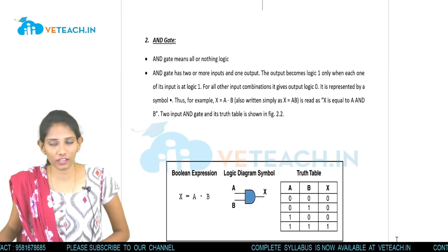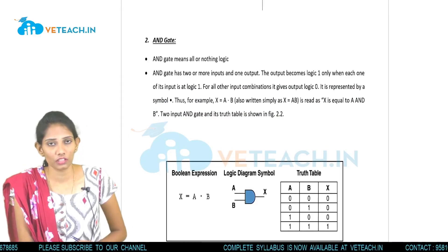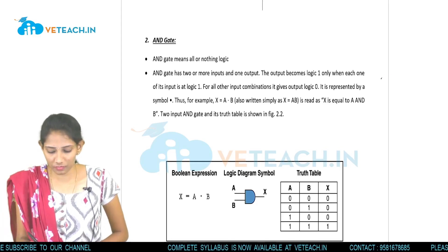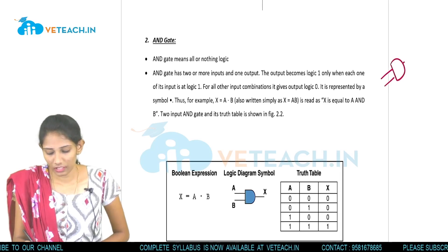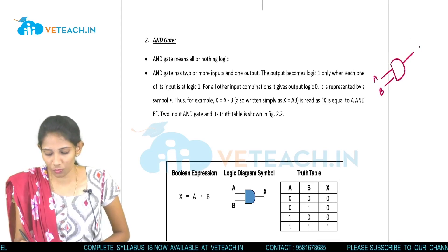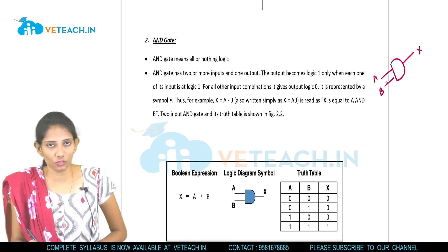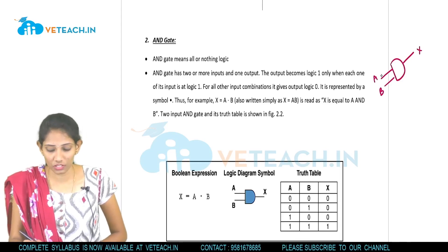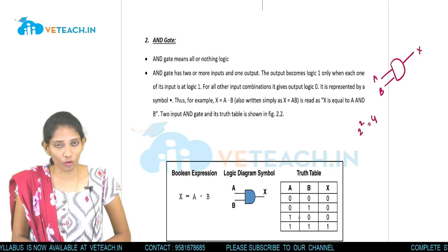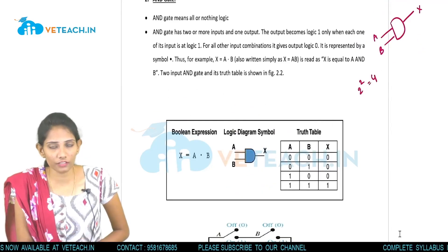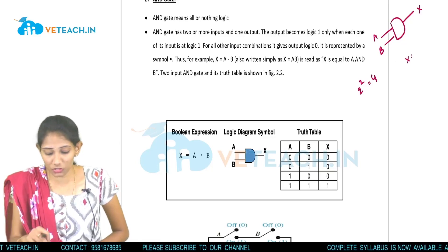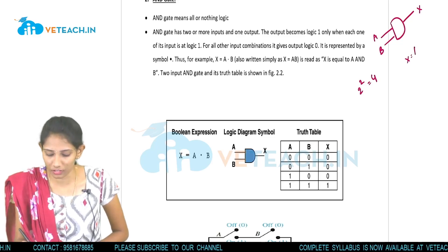The next gate is the AND gate. In the AND gate we use two or more inputs. The logic symbol of the AND gate is U-shaped. Here we apply two inputs A and B and get output X. With two inputs we take four combinations, since two to the power two equals four. The AND gate is represented by multiplication, so the boolean expression is X equals A dot B.